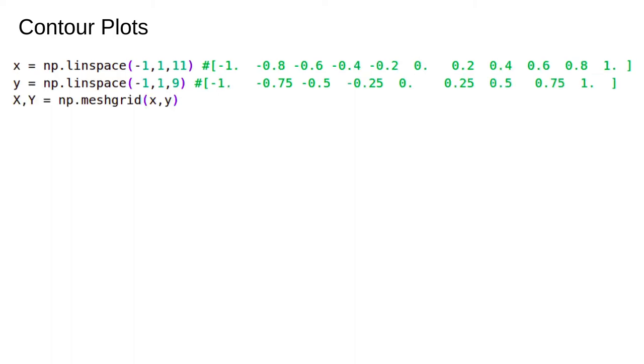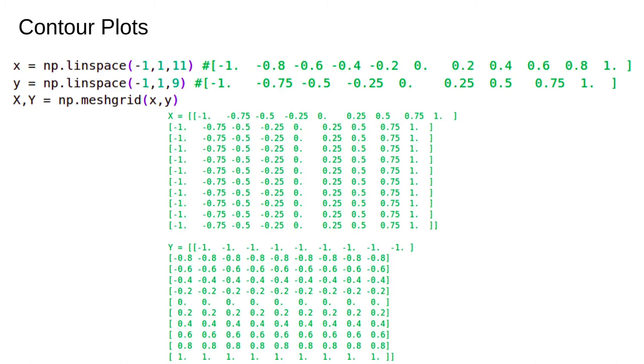Calling meshgrid will, according to the documentation, make nd coordinate arrays for vectorized evaluations of nd scalar vector fields over nd grids given one-dimensional coordinate arrays x1, x2 and so on up to xn. This is very confusing, but if you just print out capital X and capital Y you can see what's going on. Capital X consists of 11 copies of y and capital Y is 9 copies of x but rotated 90 degrees. In matrix language the array is transposed.